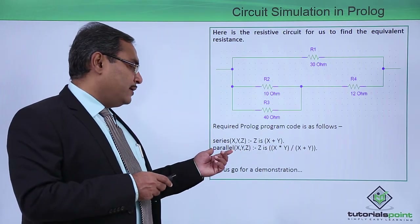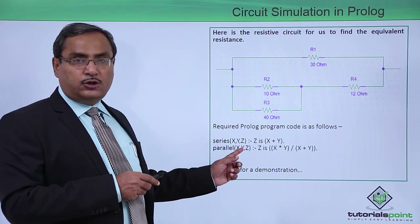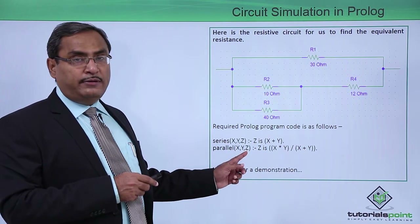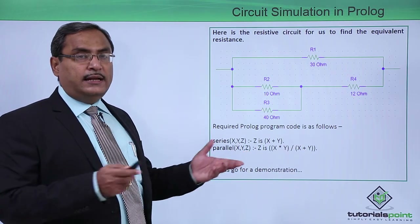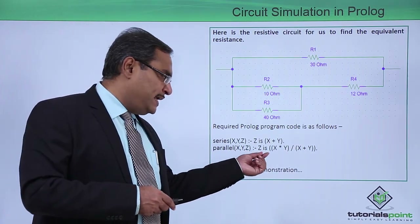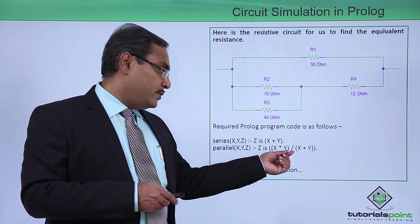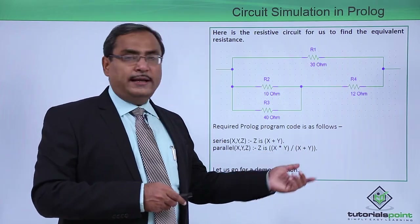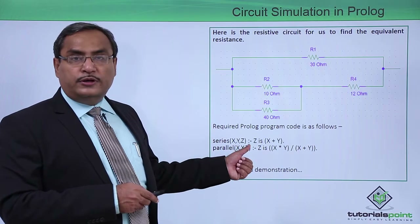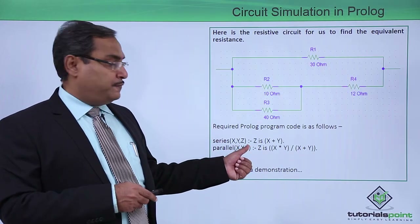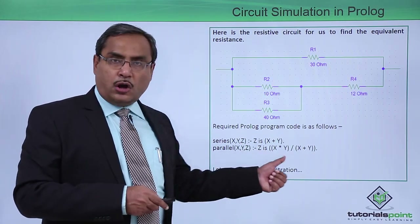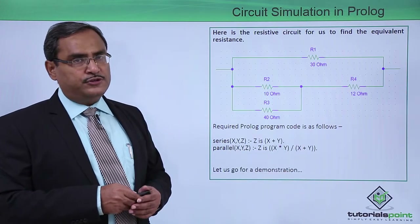In case of parallel, x and y are 2 resistances and z will be the equivalent resistance. The value of z is calculated as x into y, divided by x plus y. The symbol ':-' denotes 'if', and every Prolog clause must be terminated by a full stop.